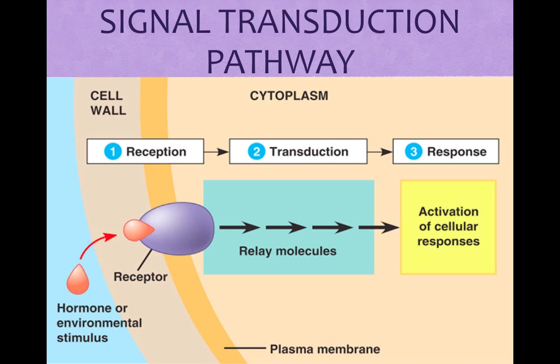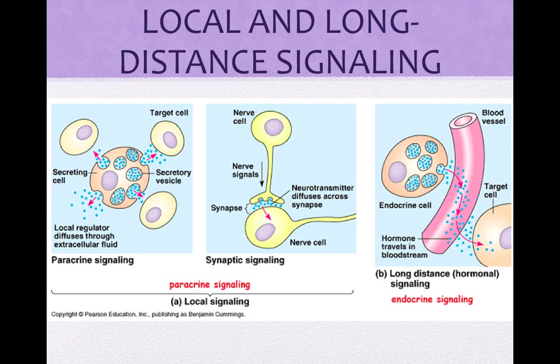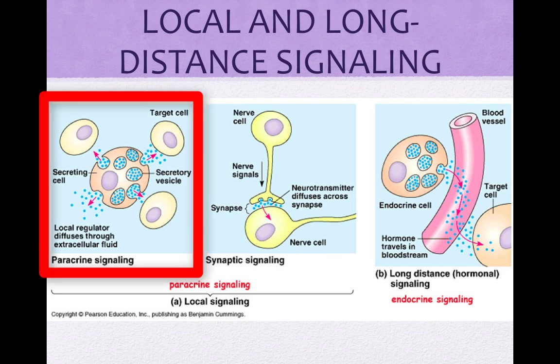Signal transduction pathways are the process by which a signal on a cell surface is converted into a specific cellular response. In multicellular organisms, communication between cells can be close together or far apart. Local regulators are secreted by cells and they influence cells in the vicinity. For example, growth factors in animal cells are a type of paracrine signaling, which stimulate nearby cells to grow and multiply.